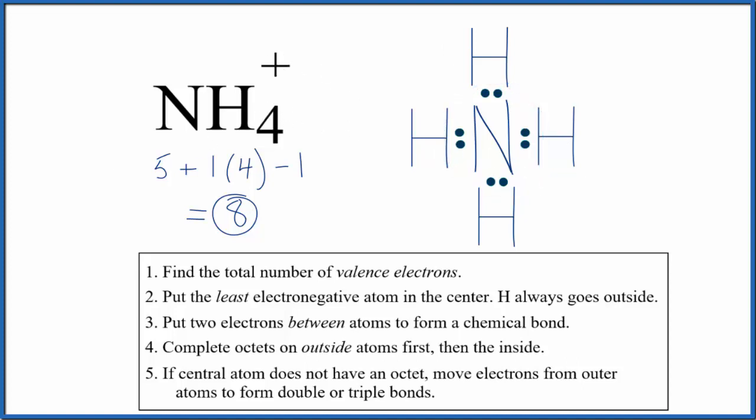Because it's an ion, we should put brackets around it. And then we'll write a positive sign outside. So this is the Lewis structure for NH4 plus, the ammonium ion.